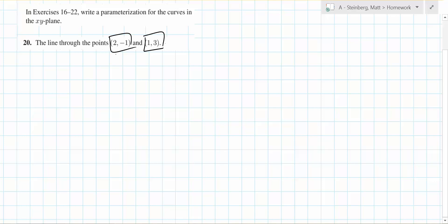We're just going to arbitrarily say that it's at (2, -1) when t equals 0 and that it's at (1, 3) when t equals 1. So the x equation...